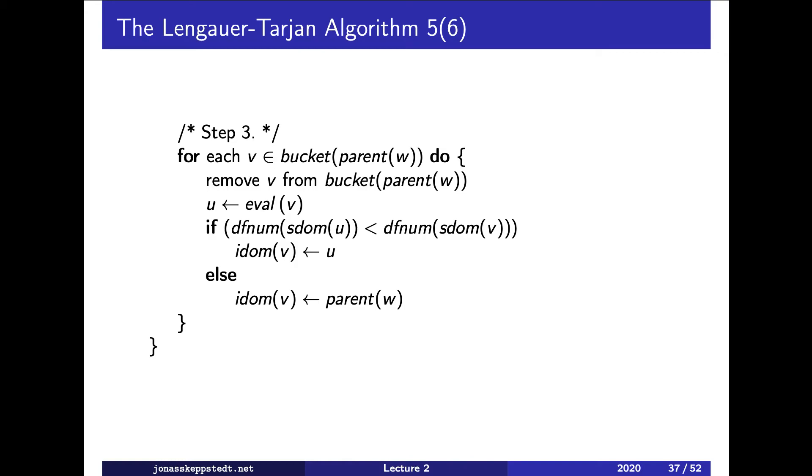What we do then is remember u so that we can take the immediate dominator of u as the immediate dominator of v. Otherwise we set immediate dominator of v to parent w, and that is identical to the semi-dominator of v.